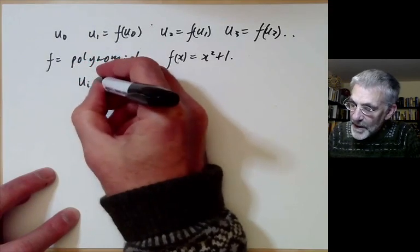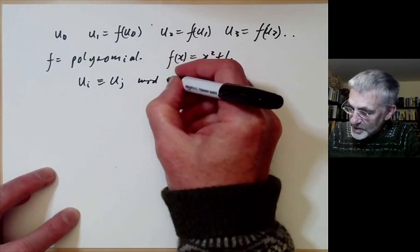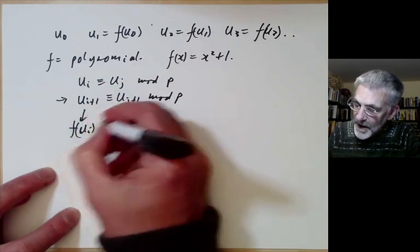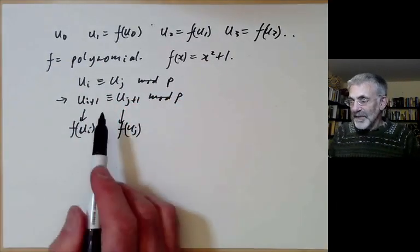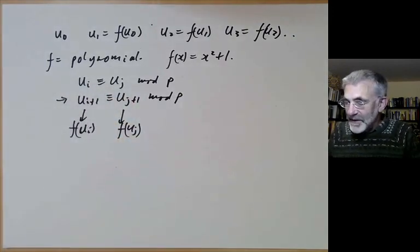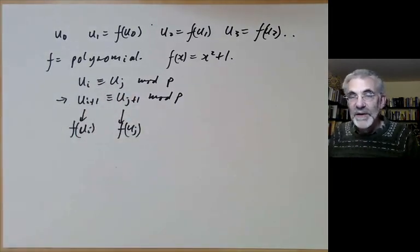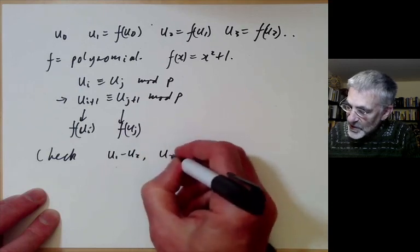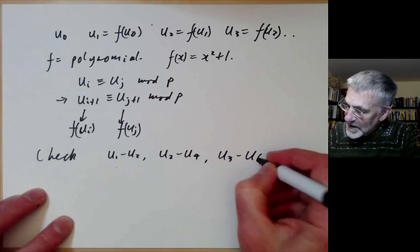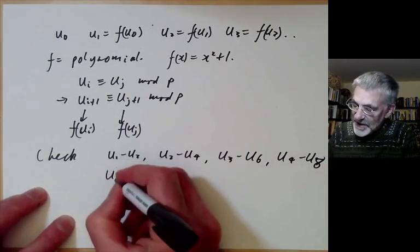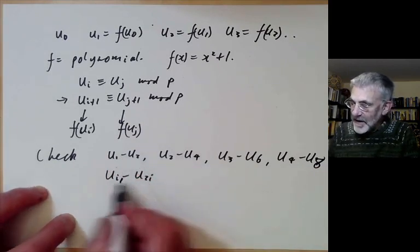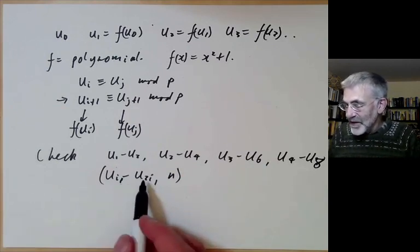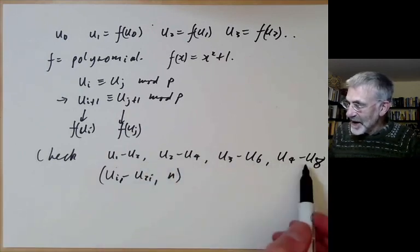What you do is you notice that if ui is congruent to uj modulo p, then this implies ui plus 1 is congruent to uj plus 1 modulo p, because this is just f of ui and this is just f of uj. So we don't need to check all pairs ui and uj, because when we check one pair, we're sort of automatically testing a large number of other pairs. So what we could do is we could just check u1 minus u2, and then check u2 minus u4, u3 minus u6, u4 minus u8, and so on.